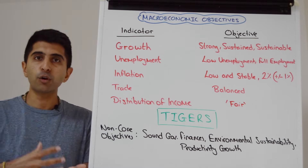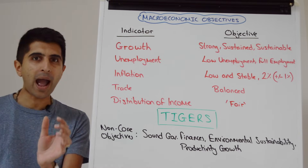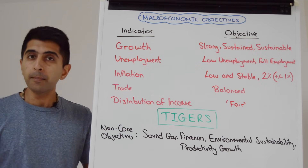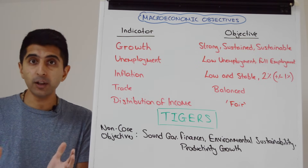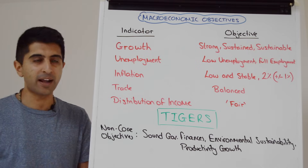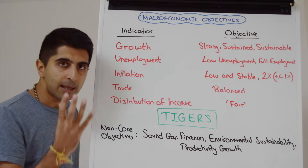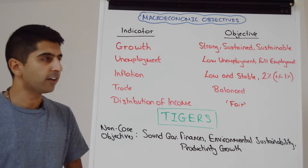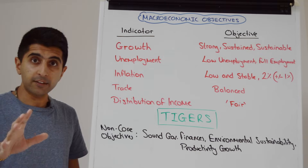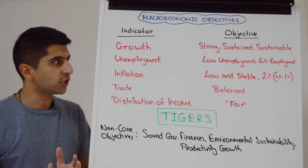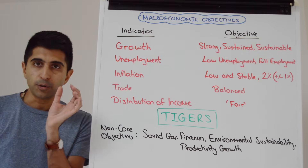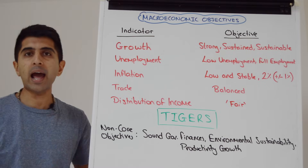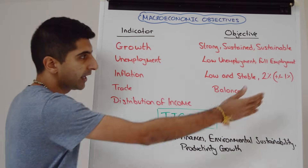Inflation is the rate of growth of prices in the economy, and we want that to be low and stable. High inflation and hyperinflation can ruin an economy, but also deflation — if prices are falling persistently — could also tear an economy to shreds. So low and stable inflation is desirable. In the UK, we have a very precise inflation target of 2%, with flexibility of plus or minus 1%, giving a range of 1% to 3%. Economies around the world will have a precise inflation target around that figure.